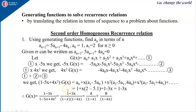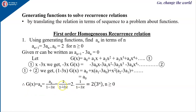We can write 2/(1−3x) = 2 · 1/(1−3x). As seen previously, 1/(1−3x) is the generating function for 3^n, so a_n = 2·3^n for n ≥ 0. This is your nth term.